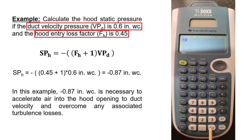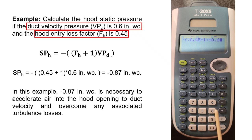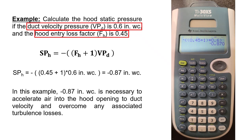For example, calculate the hood static pressure if the hood duct velocity pressure is 0.6 inches of water column and the hood entry loss factor is 0.45. Using the calculator: minus (0.45 plus 1) times 0.6 equals minus 0.87 inches water column. In this example, minus 0.87 inches water column is necessary to accelerate air to hood opening to duct velocity and overcome any associated turbulence losses.